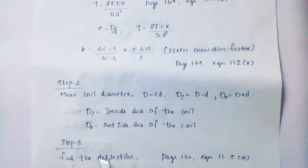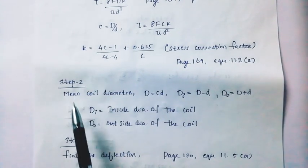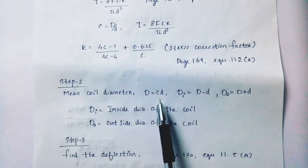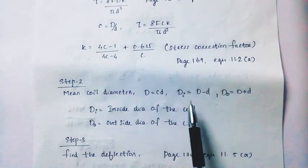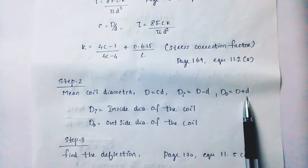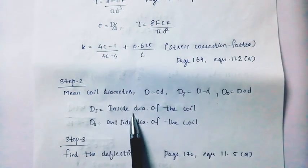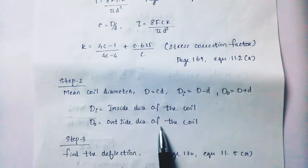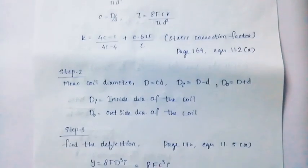Step 2 is the mean coil diameter. The mean coil diameter D equals c times d. Di equals D minus d, and D outer equals D plus d. Di equals inside diameter of the coil. D outer equals outside diameter of the coil.